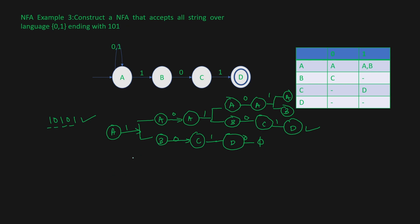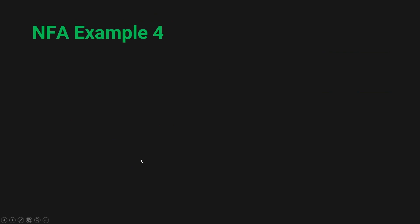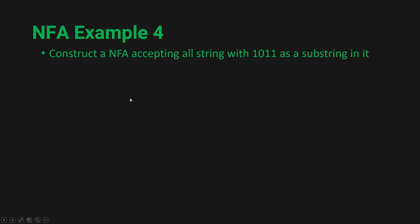So that's how we construct an NFA that accepts all strings over the language {0,1} ending with 1,0,1. Now let's look at NFA example number 4: construct a NFA accepting all strings with 1,0,1,1 as a substring.